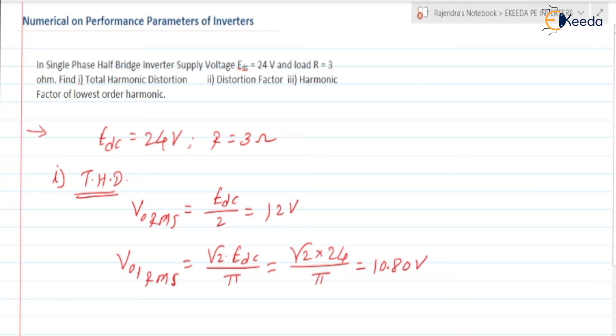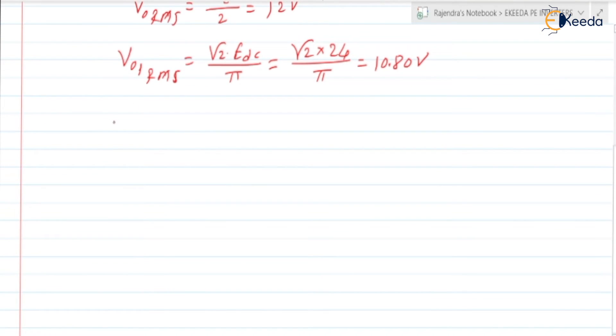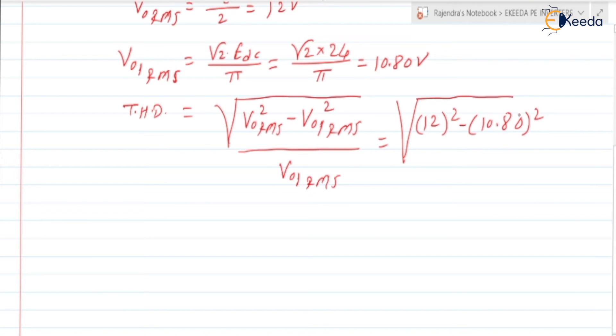Next, from this can we find THD? Yes, we can find THD. Total harmonic distortion is equal to under root V0RMS square minus V01RMS square divided by V01RMS. So if we put the value is equal to 12 square minus 10.80 square divided by 10.80. So if you check it is equal to 0.4843 or 0.484.